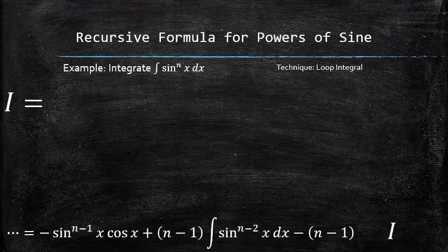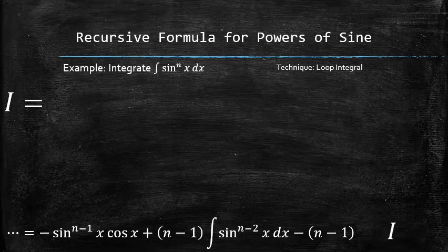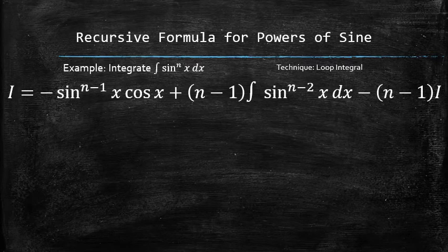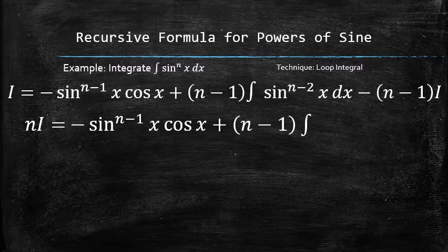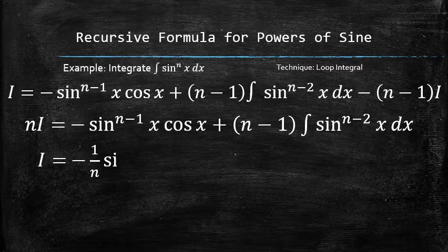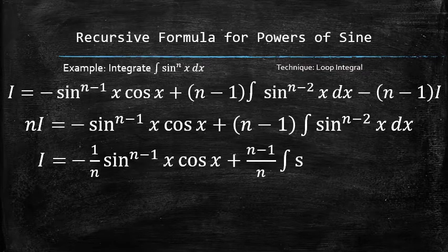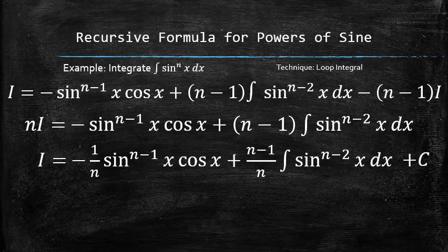After removing all the intermediate results, we now have the following equation in terms of i. To collect all i's on one side, we add n minus 1 i's to both sides, and to isolate i, we divide both sides by n and add plus c to the result.